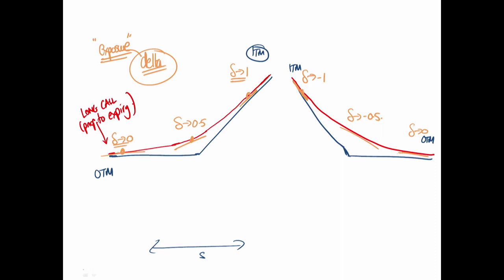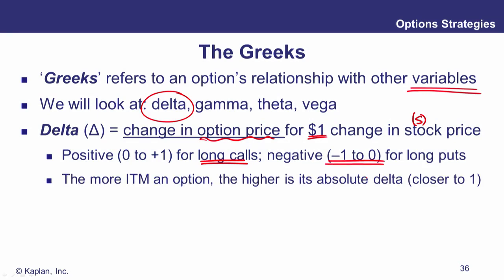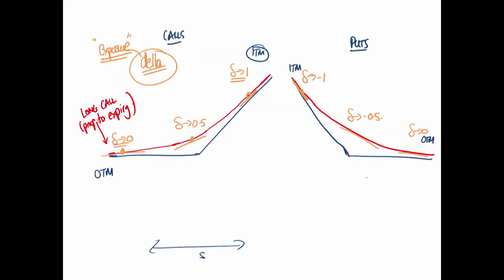So for puts, delta runs from minus one to zero. The more in the money the option, the higher the absolute value of delta — closer to one in absolute terms. The more out of the money, the closer we are to zero.